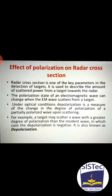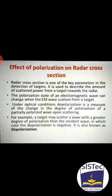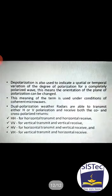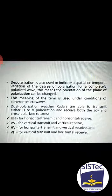Under optical conditions, depolarization is a measure of the change in the degree of polarization of a partially polarized wave upon scattering. For example, a target may scatter a wave with a greater degree of polarization than the incident wave, in which case the depolarization is negative. Depolarization is also used to indicate spatial or temporal variations of the degree of polarization for a completely polarized wave — meaning the orientation of the plane of polarization can be changed.